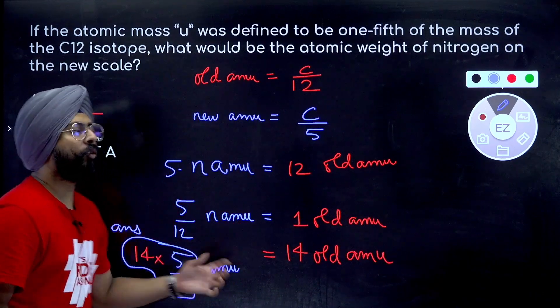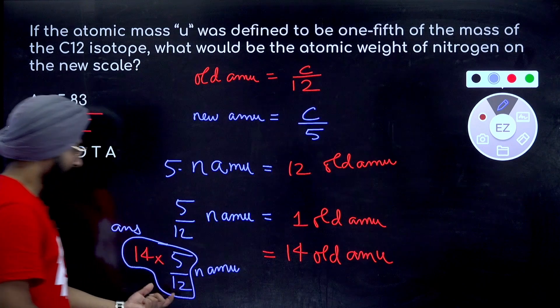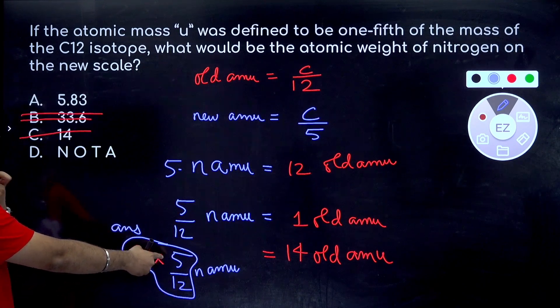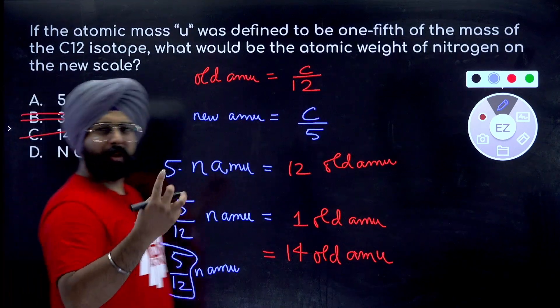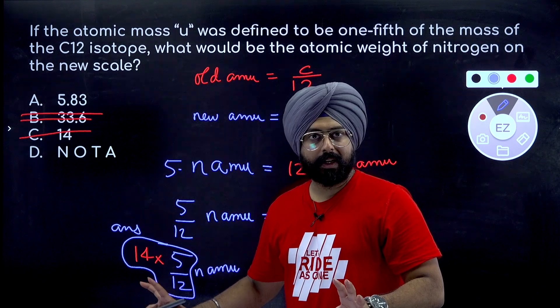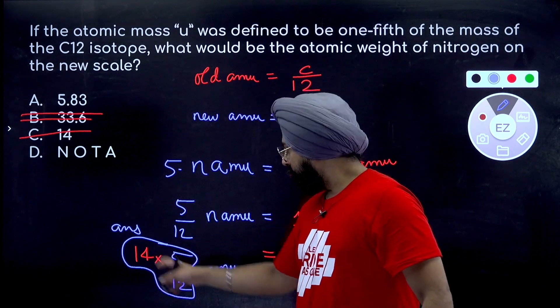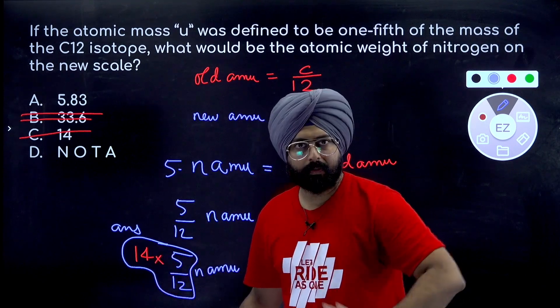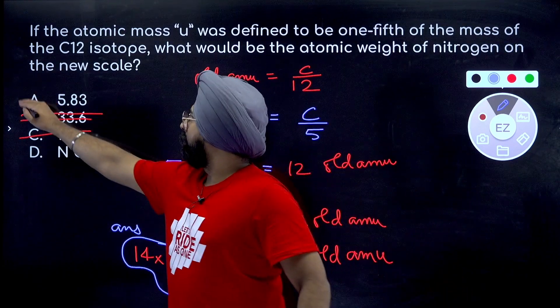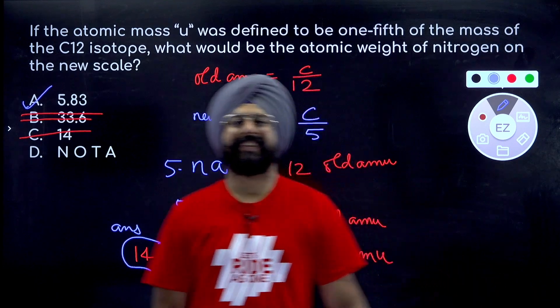How much does it come out to be? 5 into 14 by 12. 14 by 12 is little more than 1, yeah approximation technique over here to save your time. 14 by 12 is a little more than 1, so overall this answer will be little more than 5. Done.